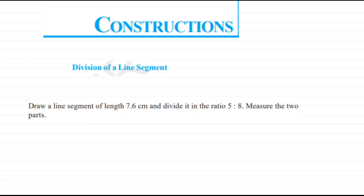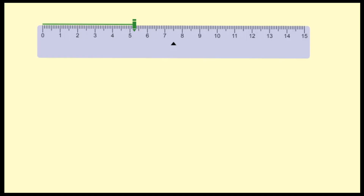Today we will see construction. The first topic is division of a line segment. We have a line segment of 7.6 centimeters and we have to divide it in ratio 5:8, and then measure the two parts. Here I have drawn a line that is 7.6 centimeters.